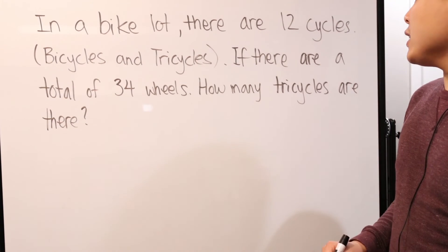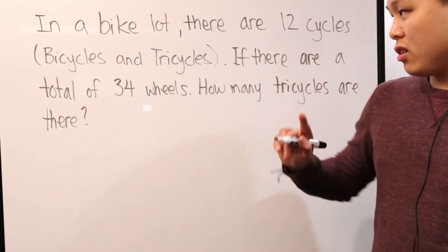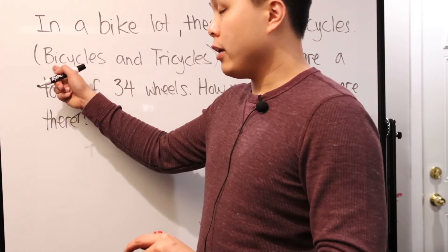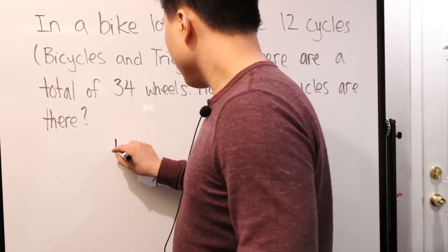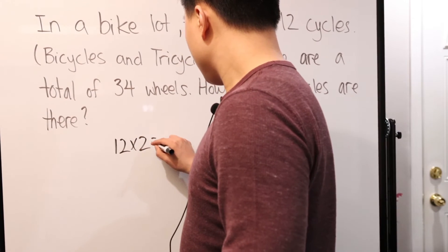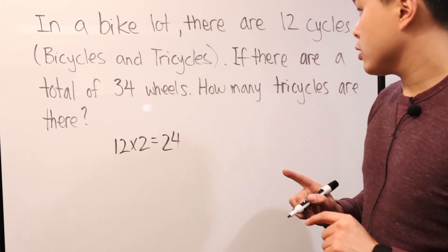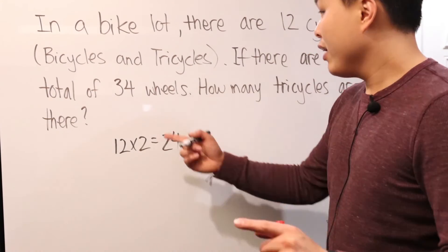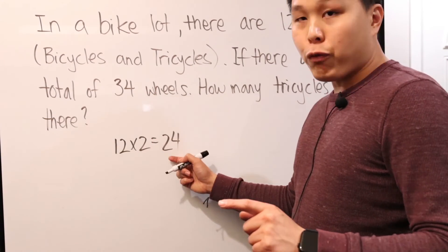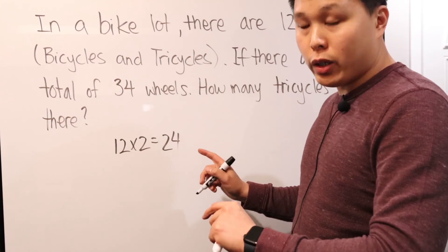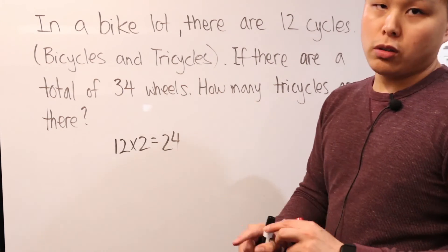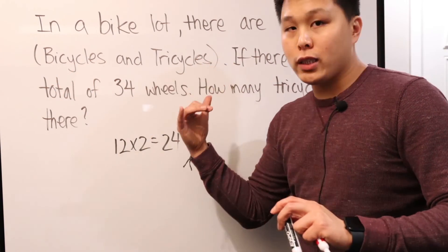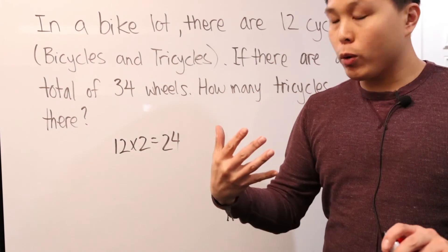Well, once again, make a basic assumption. 12 cycles, what if they're all bicycles? Well, if that's the case, bicycles only have two wheels, hence, you know, named bi, bicycle. 12 times two is 24. So there would be a total of 24 wheels. Well, that's not enough because we want 34 wheels. Well, 34 wheels and 24 wheels, the difference, what's missing is just 10 wheels. We know that tricycles, three wheels, if we were to change any of the bicycles into actual tricycles instead, then that means we're just increasing by one wheel.